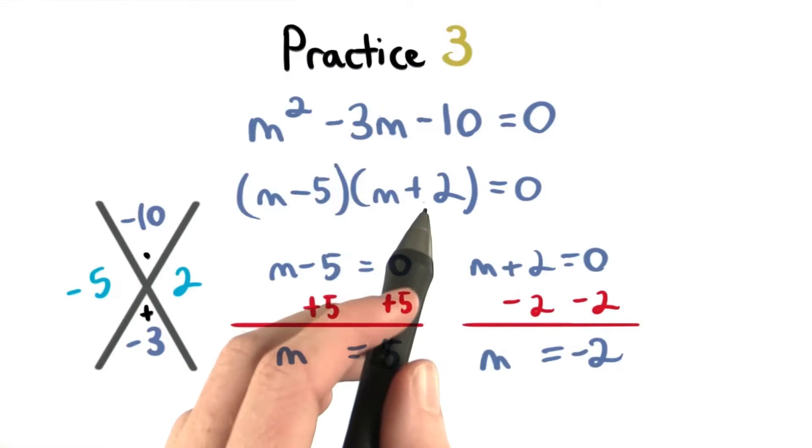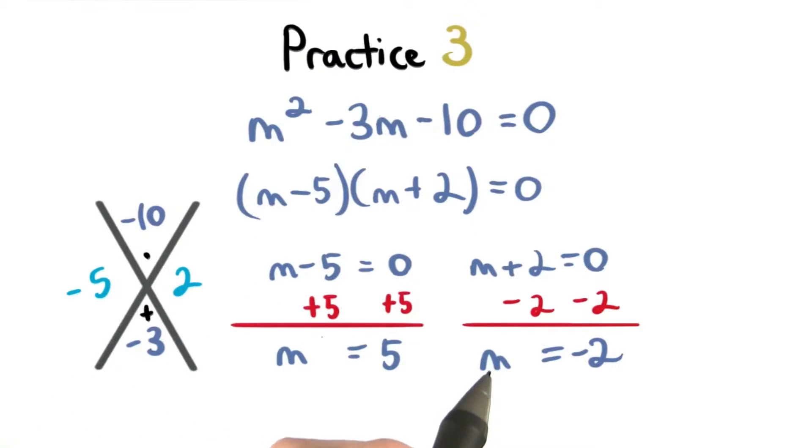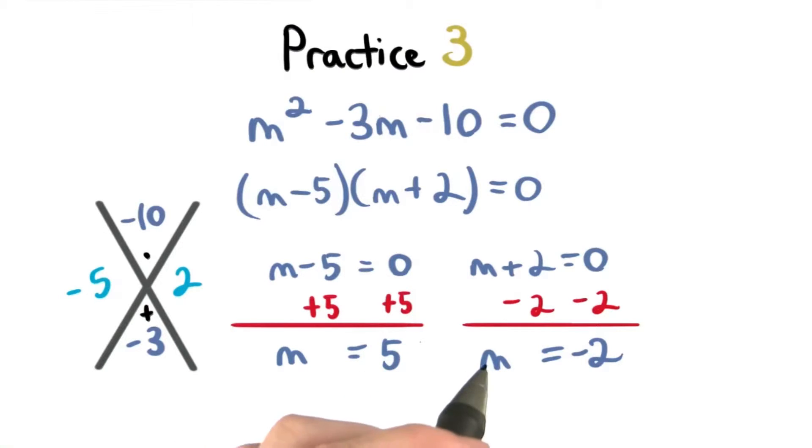We write our factors, set each one equal to 0, and solve for m. So m could equal 5 or m could equal negative 2.